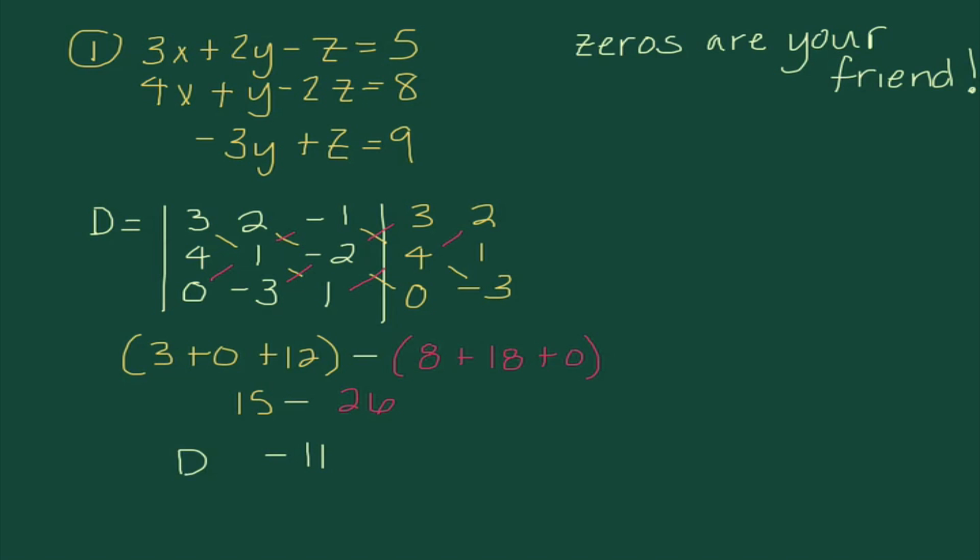Okay, so just kind of a side note. D equals negative 11. As you can already tell, this problem is going to be giant. It's going to take us a while. But, that's okay, because we are smart, we persevere, and we can do it.